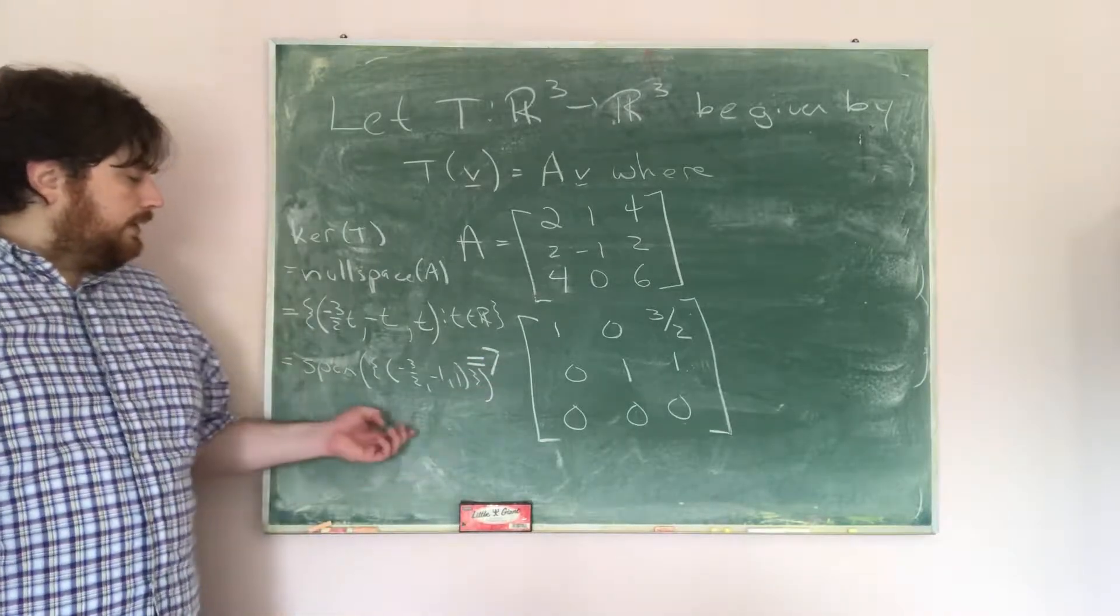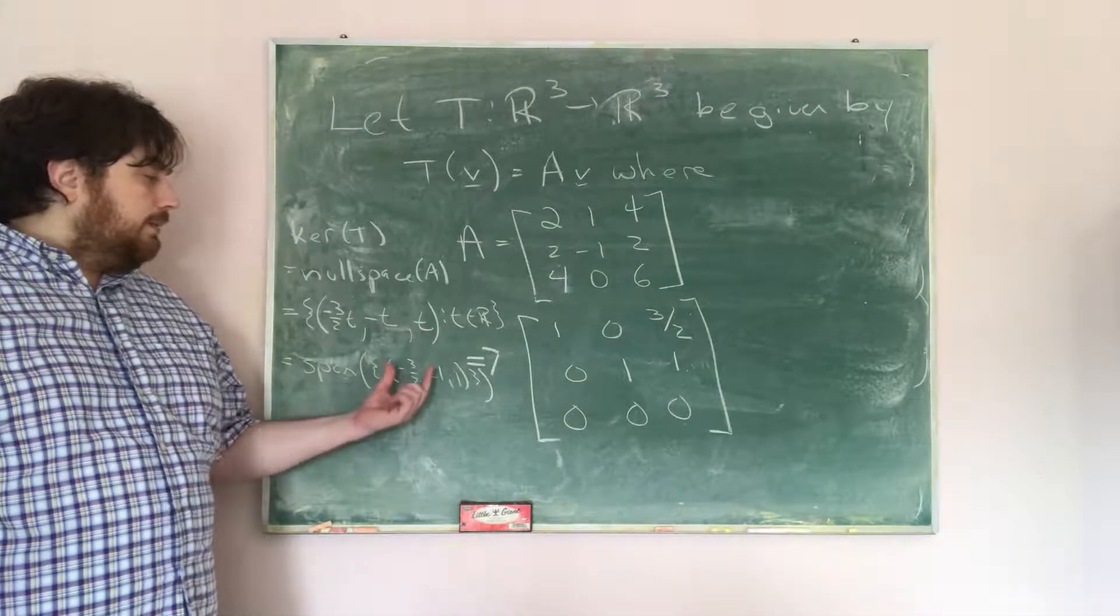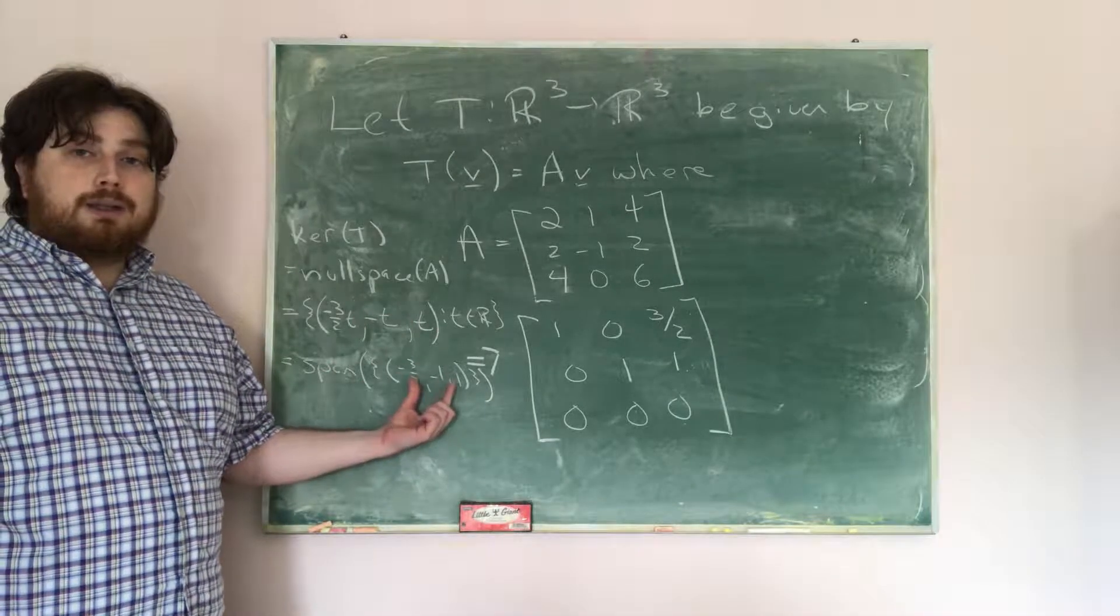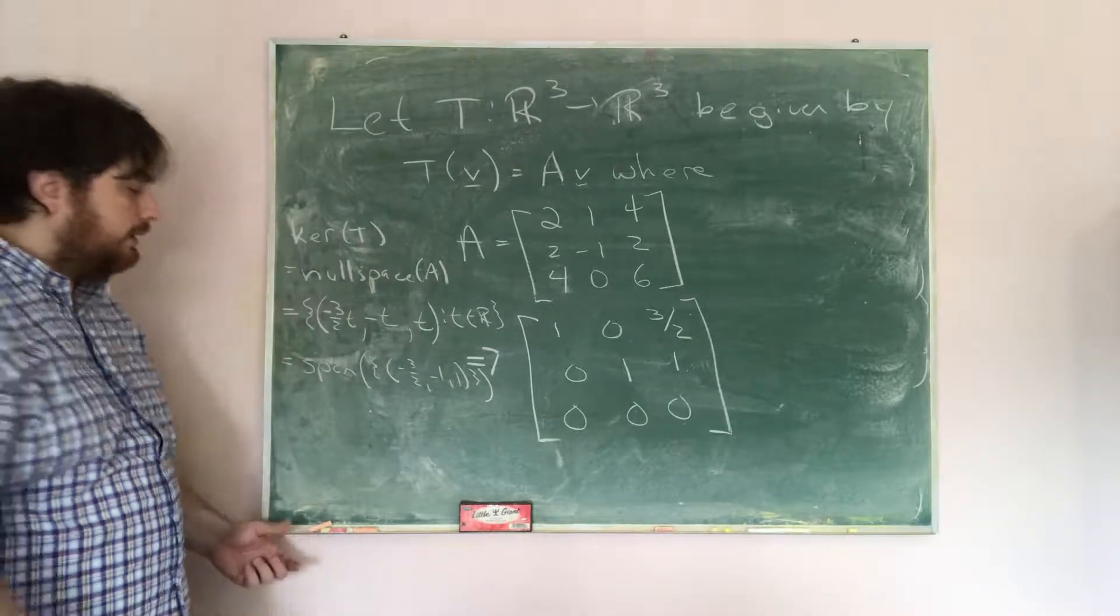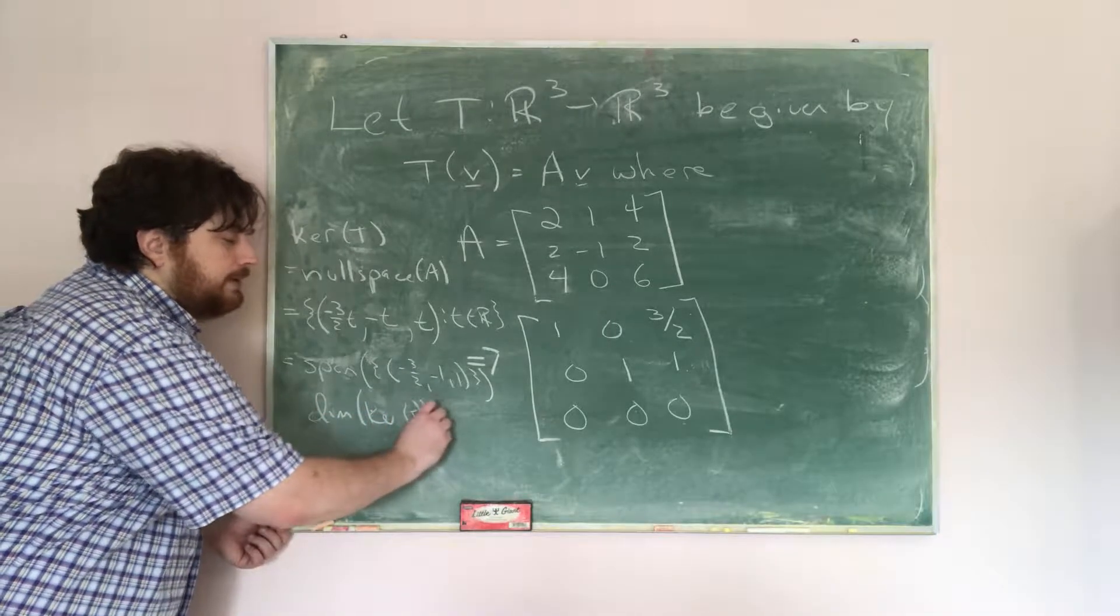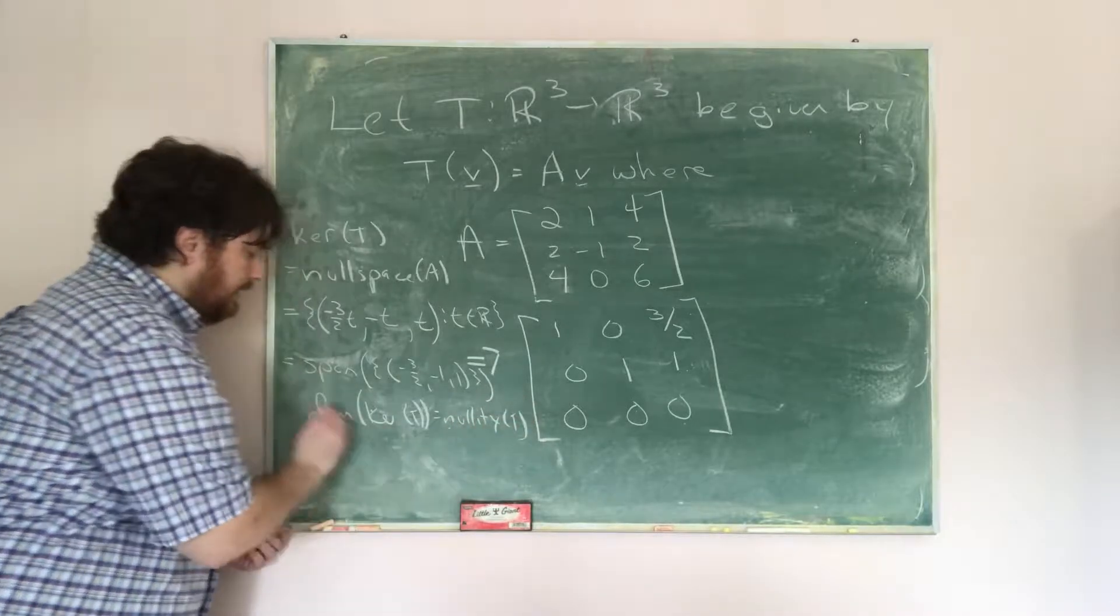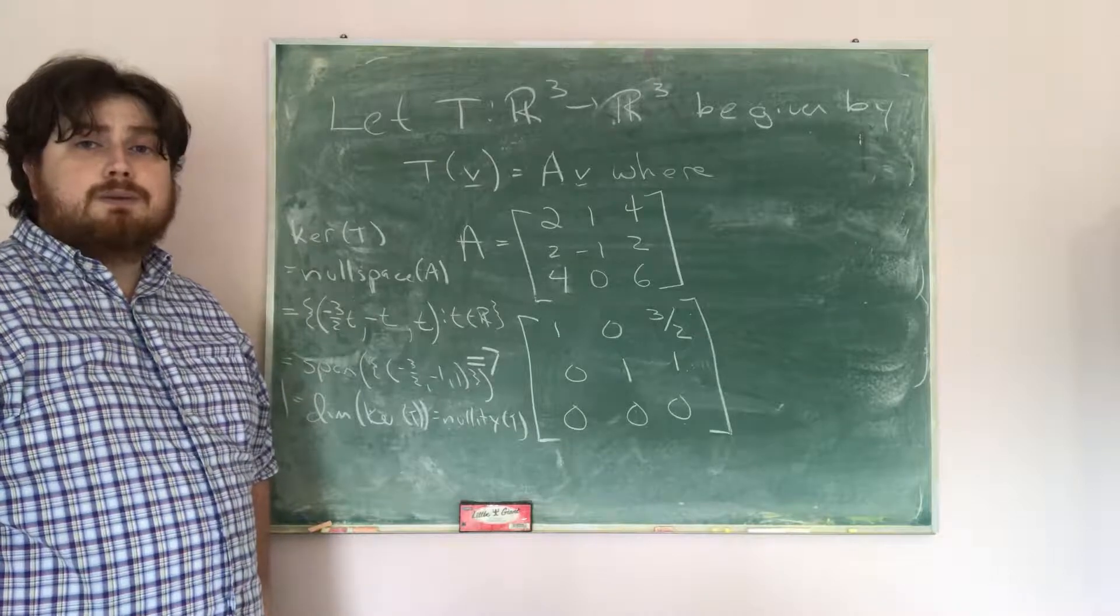And so now the reason why we're doing that is because what we have is we have a generating vector for the space, because anything in this form can be written as a constant multiple of this vector. So therefore, the dimension of the kernel, which is precisely just the nullity of T, is indeed equal to 1, because it has a basis consisting of 1 vector.